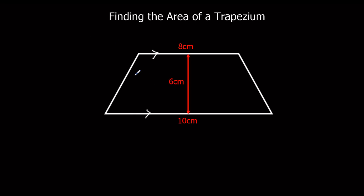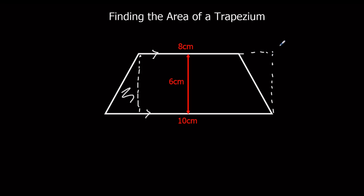This shape is a bit like a rectangle. You can imagine in this example, if you cut this bit of the shape off and flipped it round, you could put it up here and make a rectangle. So it's a bit like a rectangle.